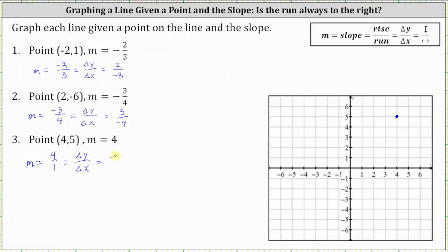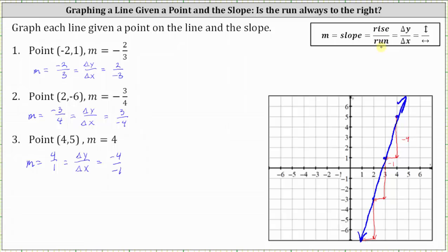Positive four divided by positive one is equivalent to negative four divided by negative one — remember, a negative divided by a negative is positive. In this form, the rise or change of y is negative four and the run or change of x is negative one, which means from the point we go down four units and left one unit. We repeat the process: down four, left one, down four, left one. This is the line passing through four comma five with a slope of positive four. To revisit the question: the run is often to the right because you write the slope with a positive denominator, but in some cases it's helpful to write the slope with a negative denominator, and therefore the run would be to the left.